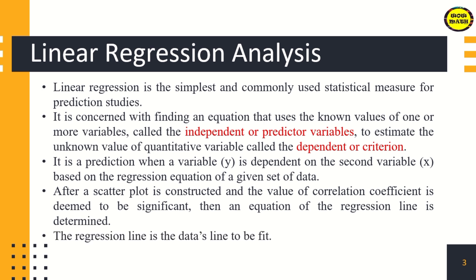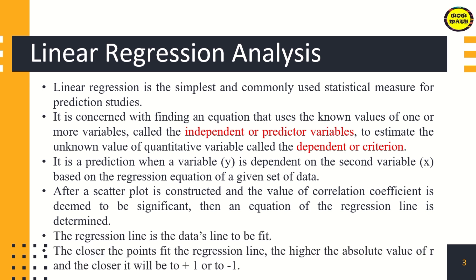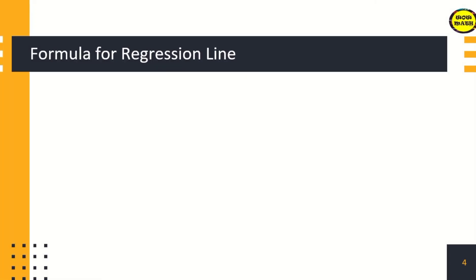The regression line is the best fit line for the data. The closer the points fit the regression line, the higher the absolute value of r, and the closer it will be to positive one or negative one. The formula for the regression line is y' = a + bx, where a is called the y-intercept of the line and b is the slope of the line.